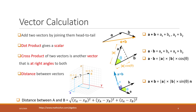We can use a similar formula to calculate distance in multiple dimensions. For example, in 3D, A and B each have three coordinates — X, Y, Z. We extend the formula to include the difference of coordinates in each additional dimension.